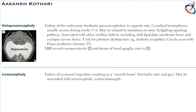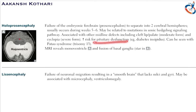Holoprosencephaly occurs when there is a failure of the embryonic forebrain to separate. The left and right lateral ventricles do not separate, there is no formation of two cerebral hemispheres, and a monoventricle forms instead. This typically occurs during the 5th to 6th week and may be related to the sonic hedgehog (SHH) signaling pathway. It is associated with midline defects including cleft lip and cleft palate in moderate forms, and cyclopia in severe forms, as well as increased risk of pituitary dysfunction such as diabetes insipidus. It can also be seen with trisomy 13 (Patau syndrome).